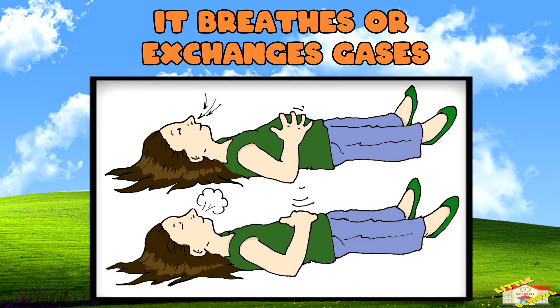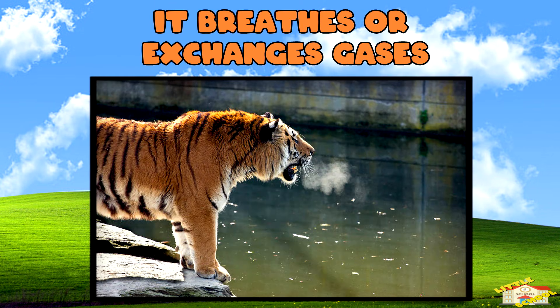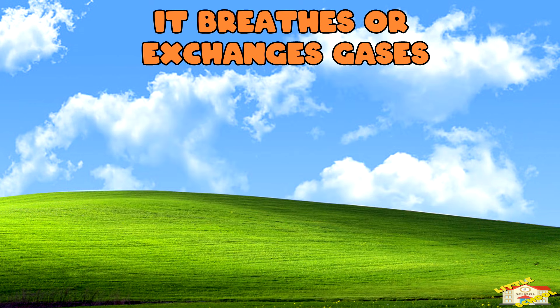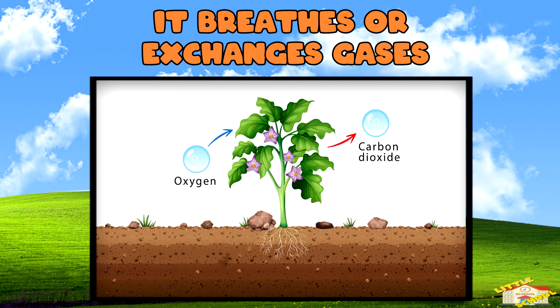They might eat food, drink water, or use sunlight. Third, it breathes or exchanges gases. Most animals breathe oxygen, but plants take in carbon dioxide and release oxygen.